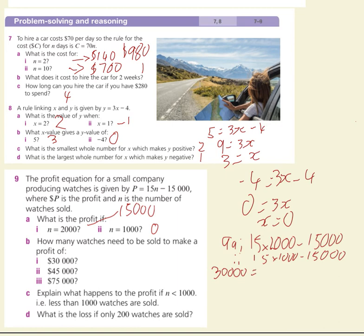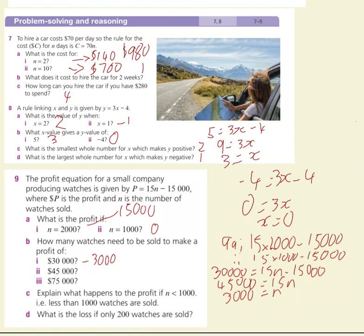How many watches need to be sold to make a profit of $30,000? Set 30,000 equals 15n take 15,000. Add 15,000 to both sides to get 45,000 equals 15n, then divide both sides by 15 to get n equals 3,000. You need to sell 3,000 watches to make $30,000 profit.